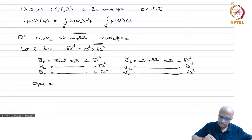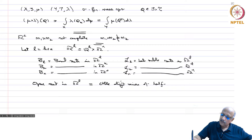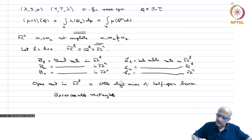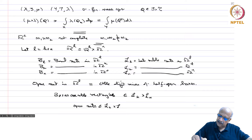Given any open set in R^L, it equals a countable disjoint union of half-open boxes — we have seen this before. Any open set can be written as a countable disjoint union of half-open boxes. Therefore, since boxes are measurable rectangles, they belong to L^k cross L^n, and therefore open sets are also in L^k cross L^n. This implies that B^L, the Borel sets, is contained in L^k cross L^n.